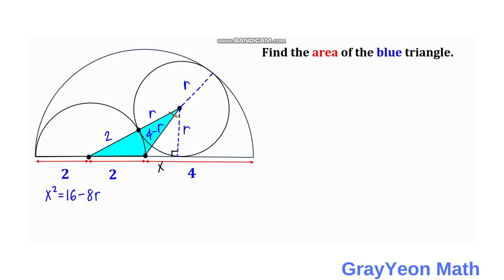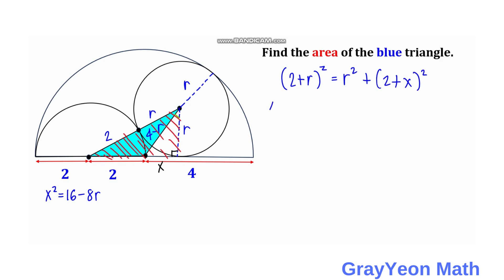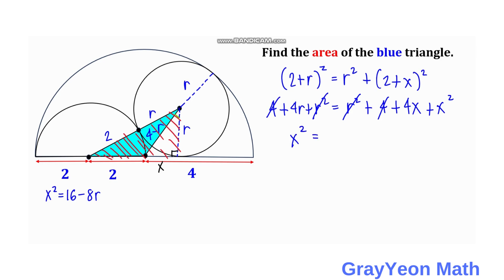Next, we focus on this right triangle and write a Pythagorean theorem equation. We have (2 plus r) squared equals r squared plus (2 plus x) squared. Expanding: 4 plus 4r plus r squared equals r squared plus 4 plus 4x plus x squared. We cancel the r squared terms and the 4s, and we have x squared equals 4r minus 4x.